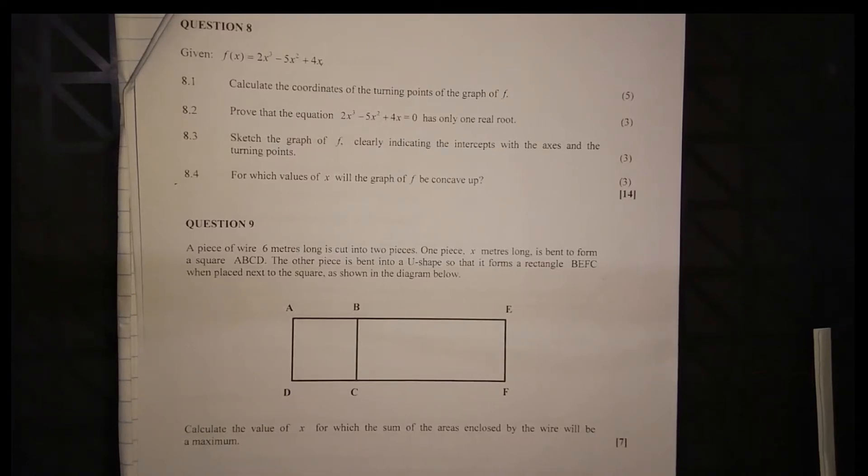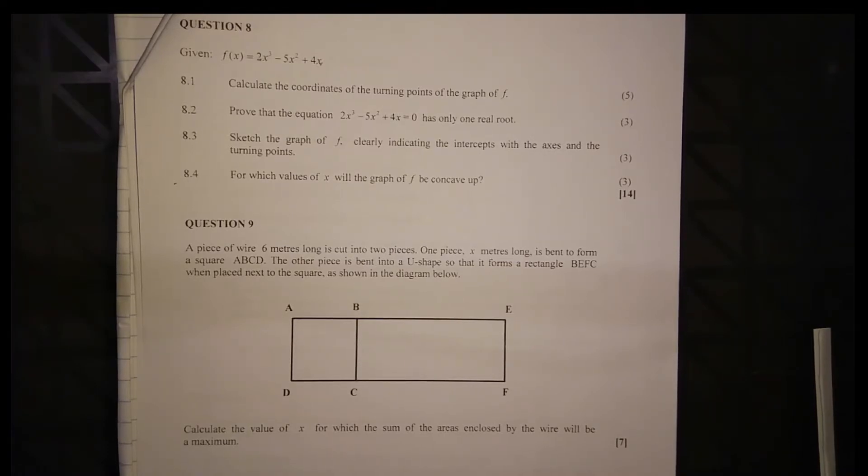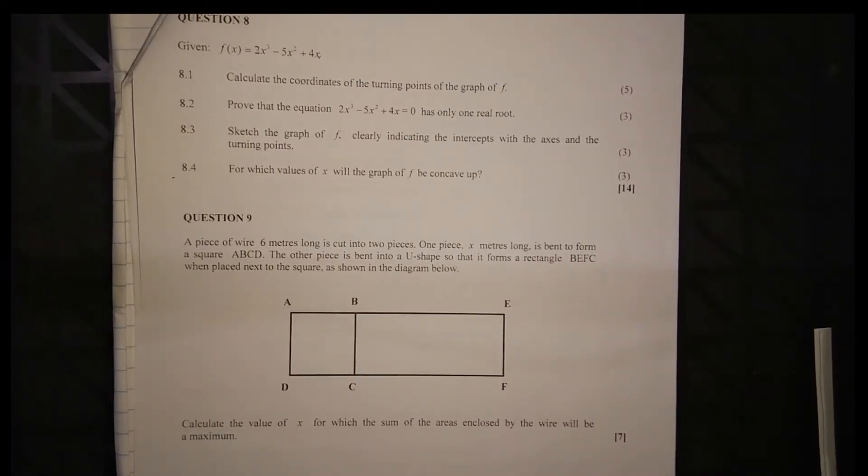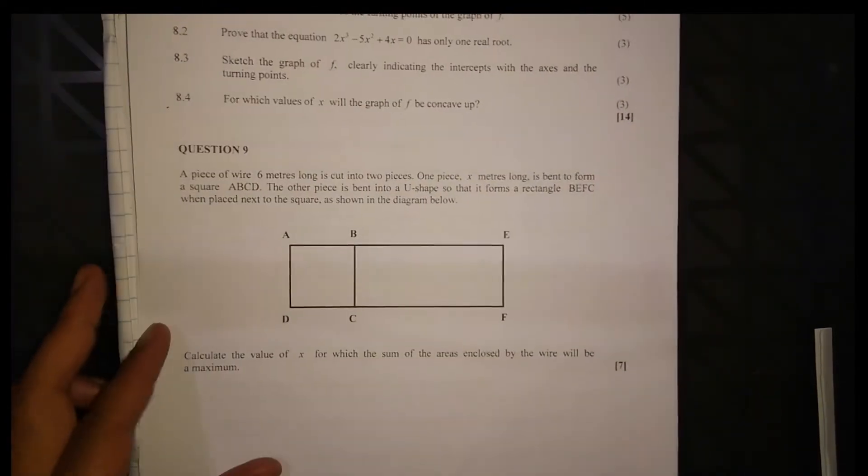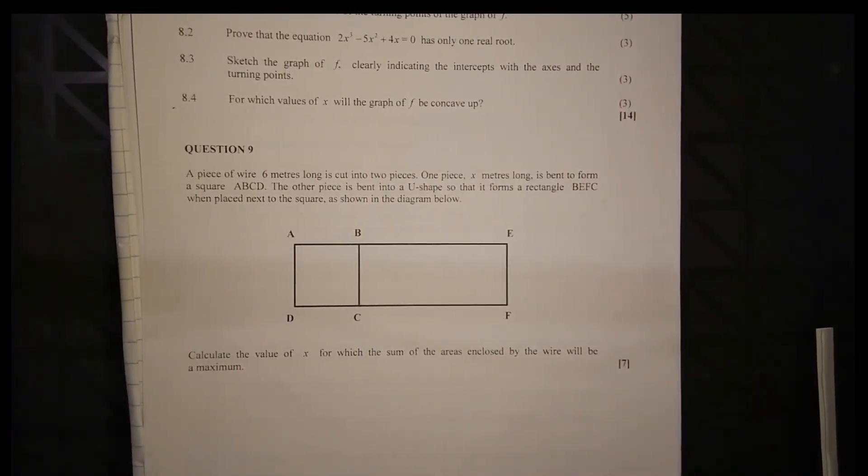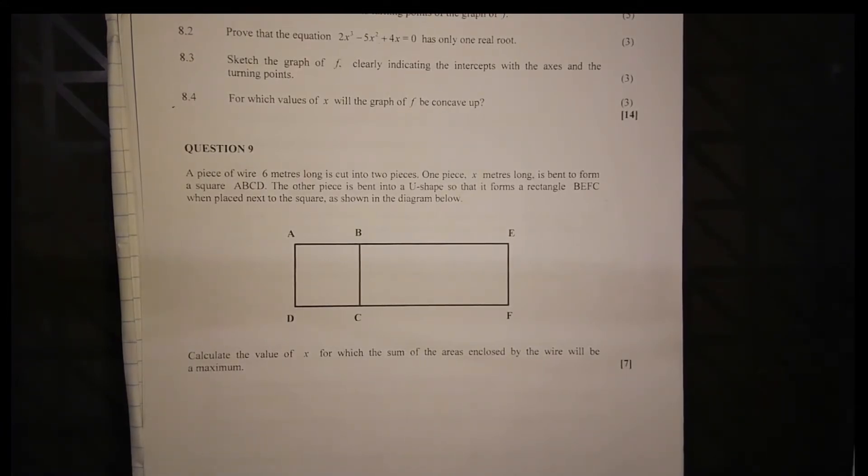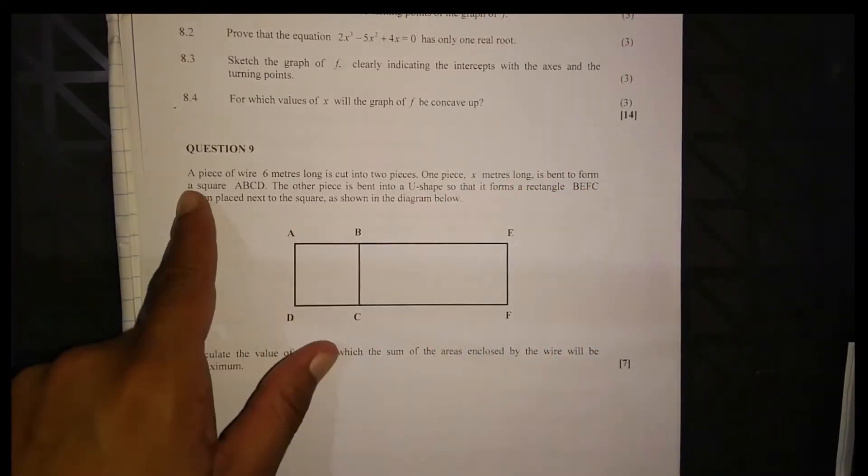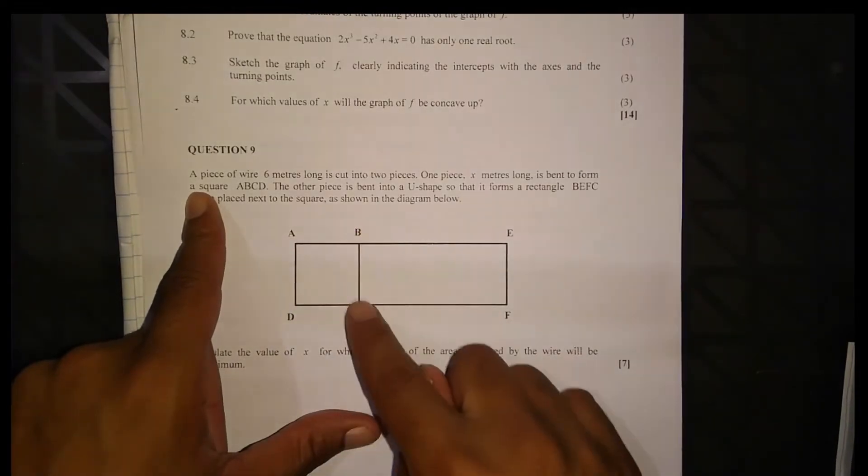Okay, now Question 9. Question 9 is still a differentiation problem, but the focus is on optimization - finding minimum or maximum values for any given problem. The problem states: a piece of wire six meters long is cut into two pieces. One piece, x meters long, is bent to form a square ABCD.